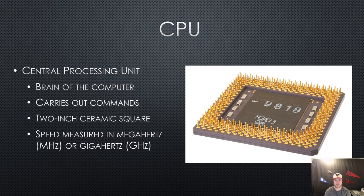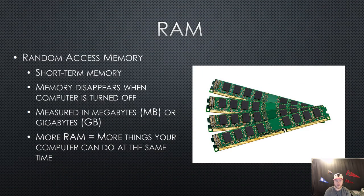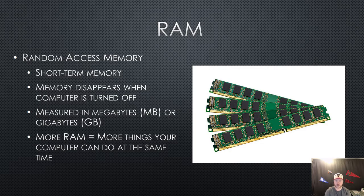Keep in mind there are other things that affect computer speed, but the processor is a good starting point. The next thing you're going to want to look at is your RAM, or random access memory. Your random access memory is your short-term memory on the computer. Anytime you open up a web browser or any other application, it's going to access your short-term memory. This memory disappears when the computer is turned off, so it's not made for storing anything long term. It's measured in megabytes or gigabytes, and the rule of thumb is the more RAM you have, the more things your computer can do at the same time.